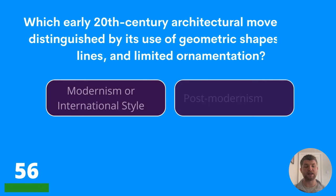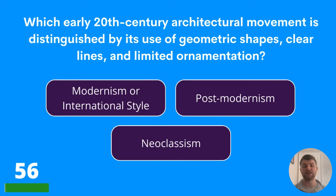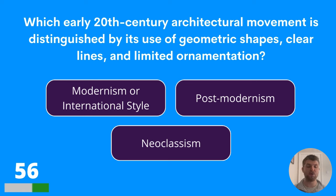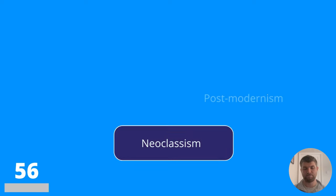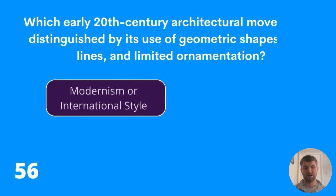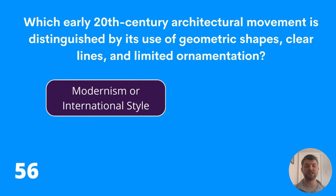Question fifty-six: which early 20th century architectural movement is distinguished by its use of geometric shapes, clear lines, and limited ornamentation? The answer is Modernism, or the International Style.